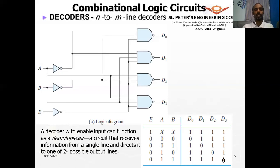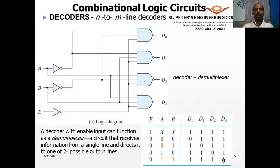This 2-to-4 decoder uses only 2 inputs with an enable circuit — not 3 inputs (the enable provides extra control, not a data input). A decoder with an enable input is also called a demultiplexer (DMUX). It receives information from a single line and directs it to one of 2^N output lines.